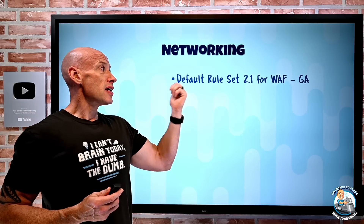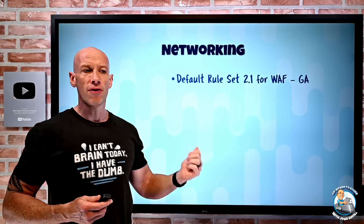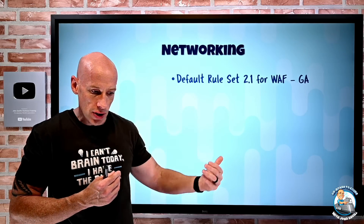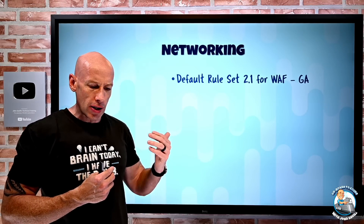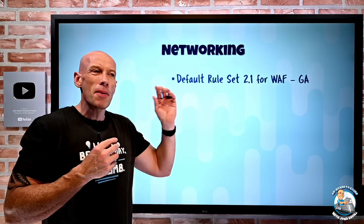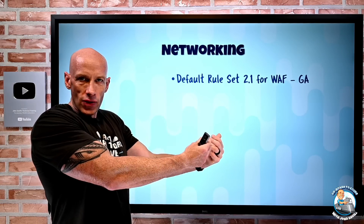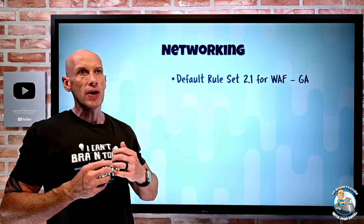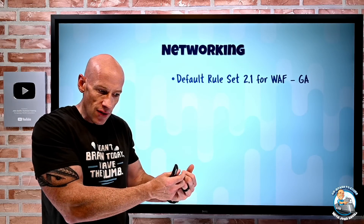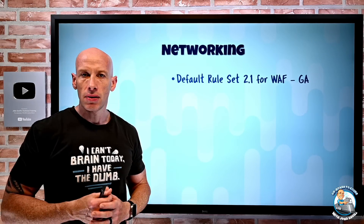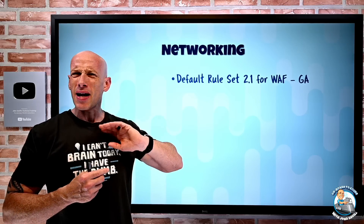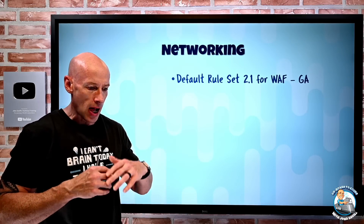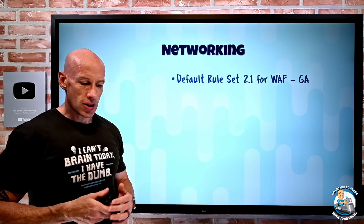On the networking side, there's a new default rule set 2.1 for Web Application Firewall. This is only for the global WAF — part of Azure Front Door Premium. It's based on the OWASP Core Rule Set 3.3.2, and the whole point of default rule set 2.1 is it builds on that standard set but Microsoft's own threat intelligence team tweaks it — making various changes to increase detection, remove false positives — and it's now GA. This protects against things like SQL injection, Node.js attacks, cross-site scripting, PHP injection, remote code execution, and more.